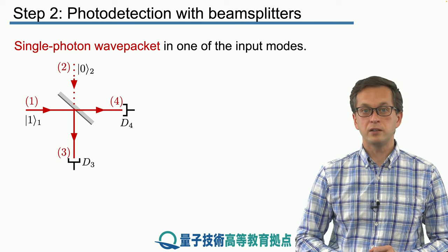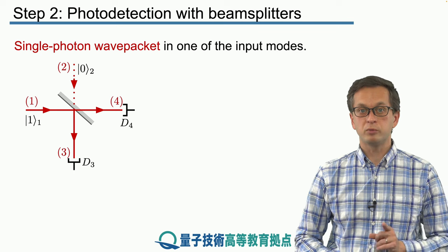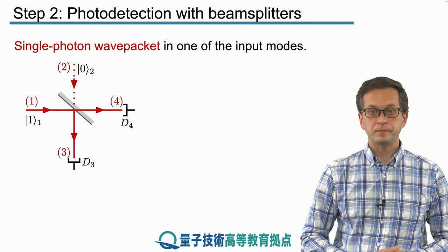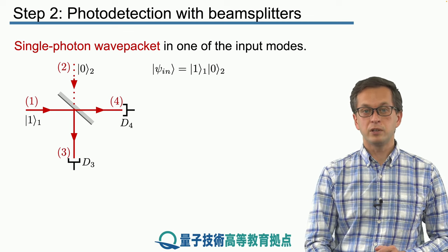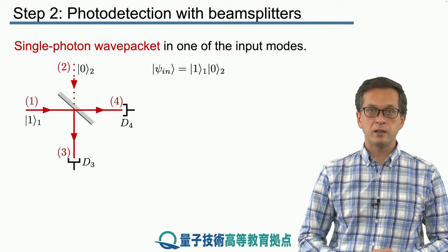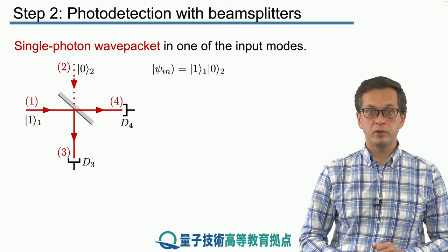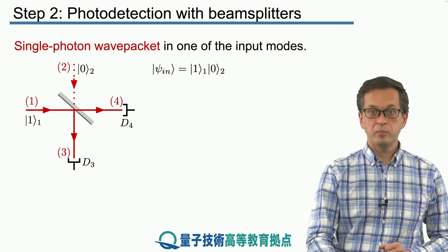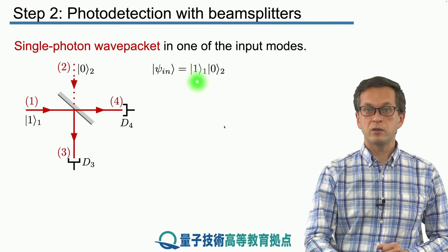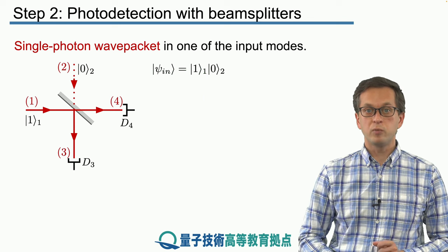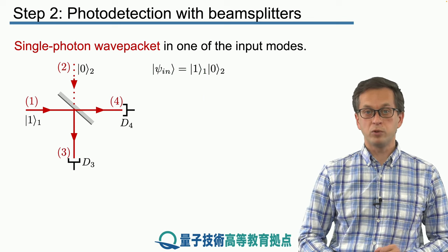So now let's place our detectors at output mode 3 and output mode 4. How do we compute the photodetection signals? We just apply the usual formula that we talked about in the previous lesson. So our input is given by the following: we've got a tensor product of one photon in mode 1 and vacuum in mode 2.